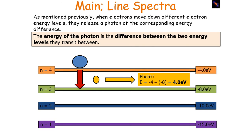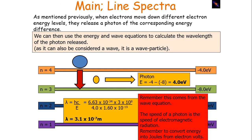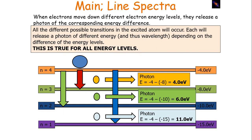The energy of the photon is the difference between the two energy levels it transits between. We can then use the energy and wave equations to calculate the wavelength of the photon released, as it can also be considered a wave because of wave-particle duality. This is true for all possible transitions in an excited atom — each will release a photon of different energy and therefore different wavelength, depending on the difference of the energy levels.